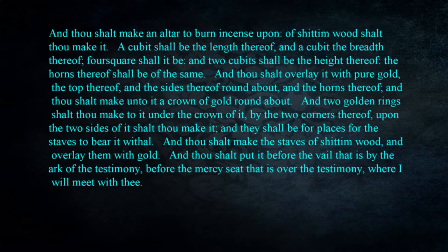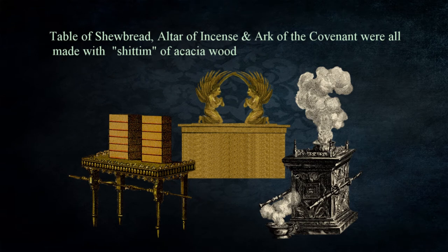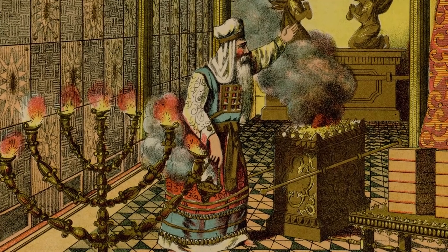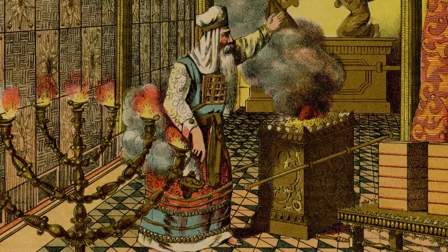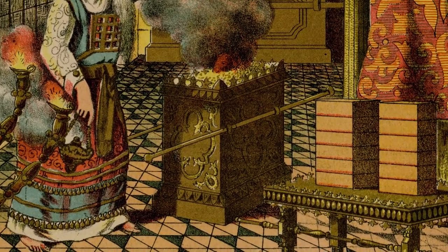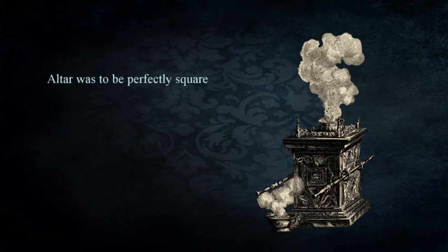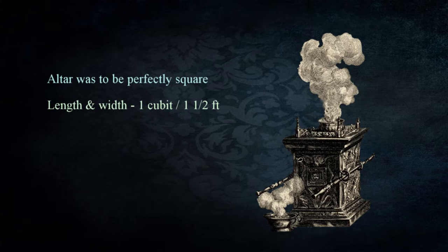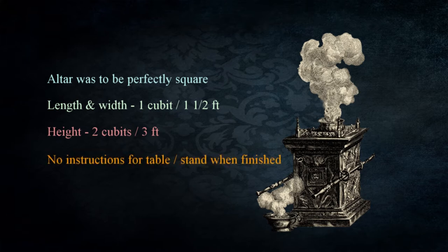'And thou shalt put it before the veil that is by the ark of the testimony, before the mercy seat that is over the testimony, where I will meet with thee' — Exodus 30:1-6. In this description we see consistency with the other objects made and placed in the tabernacle. The table of showbread and altar of incense were made of shittim or acacia wood, as was the ark of the covenant, and were to be overlaid with gold on the top and sides. At the corners were horns also overlaid with gold, and a crown around the top. The altar was to be perfectly square, measuring one cubit in length and width — approximately a foot and a half — and two cubits, or about three feet, in height.